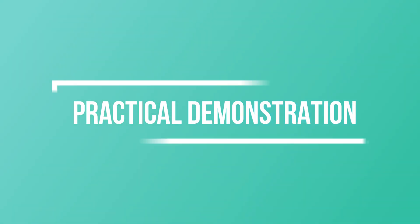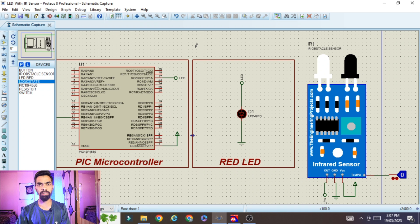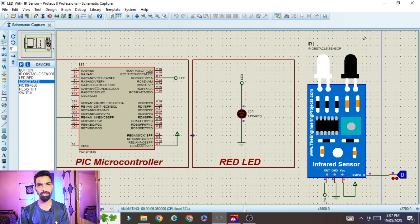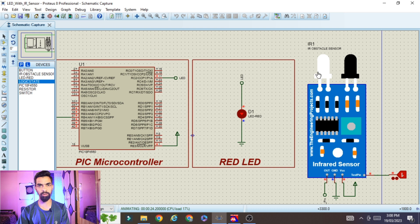Before starting, let me show you the final output. Once the project runs, the LED will be off by default. When I give a logic one signal to the IR sensor — meaning an obstacle is present in front of it — the LED turns on. When I give zero, it turns off. This is a simulation, so we use a logic state to simulate the obstacle. On actual hardware it works the same way.